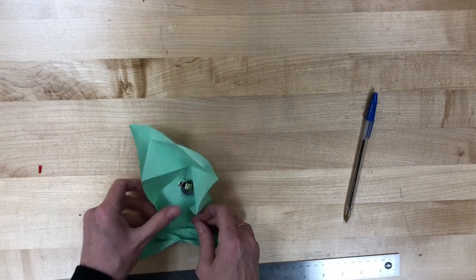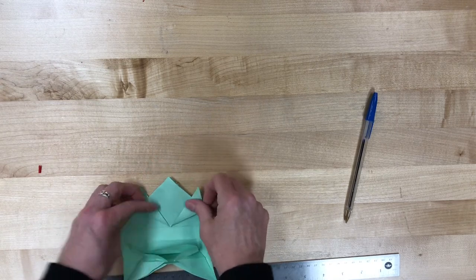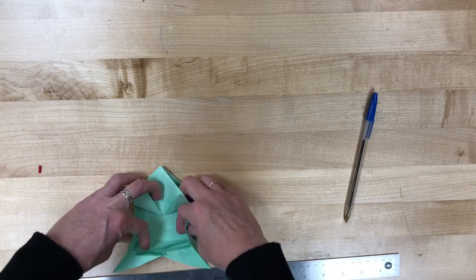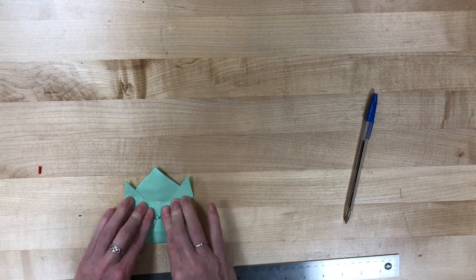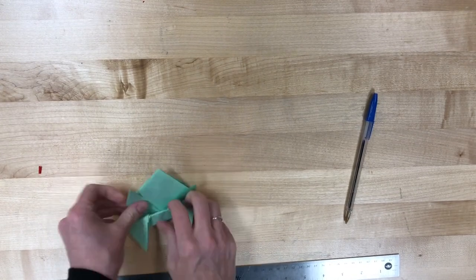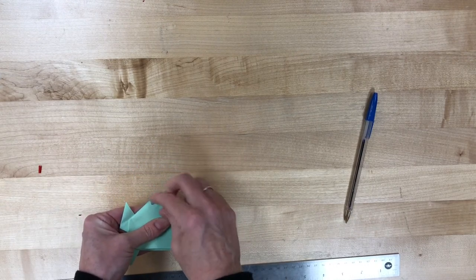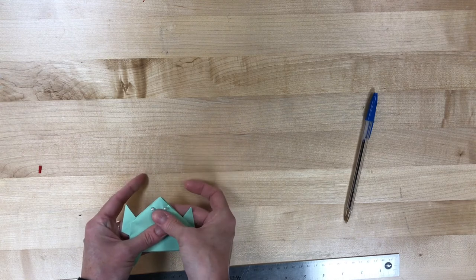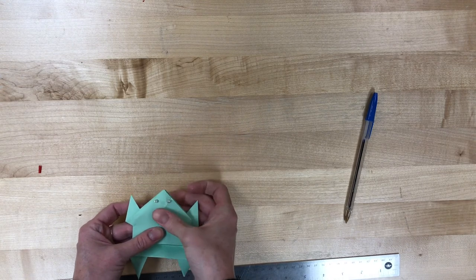Then we fold it all back up, which it already has all the lines in place. So it should be not too tricky to get it all back the way we had it. Get those legs folded up. And now, I'm going to bend those eyes back just a little bit so they're not leaning so far forward. And now you have glowing red eyes for your hopper.